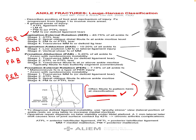To recap supination-external rotation: the foot is in supination, force is external rotation. The lateral side is in tension, so injury begins laterally with ligamentous injury, then causes a spiral oblique fracture of the distal fibula, then goes posteriorly causing posterior malleolus fracture or PTFL injury, and lastly causes medial malleolus or deltoid ligamentous injury. In supination-adduction: there is an avulsion fracture of the distal fibula first, then a vertical fracture of the medial malleolus.